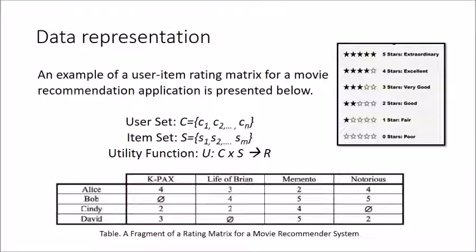In this matrix you can see that the rows are Alice, Bob, and the columns are the K-PAX, Life of Brian. It represents how Alice likes this particular movie K-PAX - it's four, four means high likelihood. This is a two-dimensional matrix that is built behind a recommendation system.